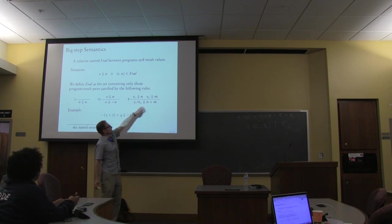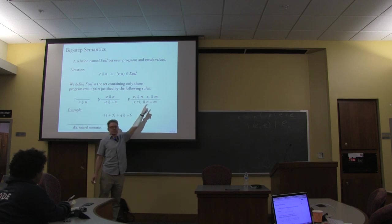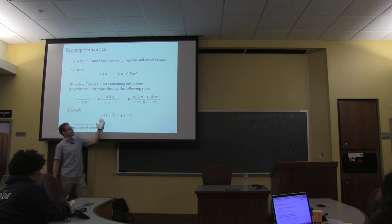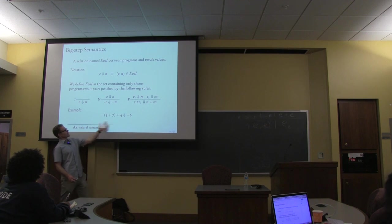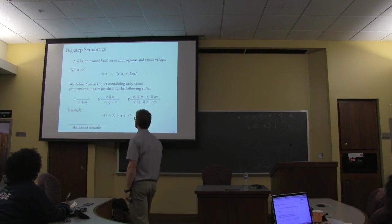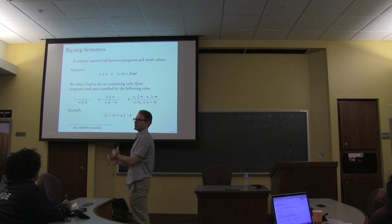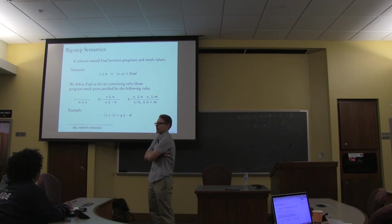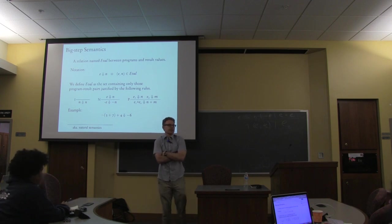The rule for addition: the sub-expressions evaluate down to two numbers, and then we actually add them to get one result number. Here's an example of a program and result that's in the eval relation — this big program evaluates to negative six. Those labels were just names for the rules so we can refer to them later — I for integer, N for negation, P for plus. That's the mnemonic I had in mind.